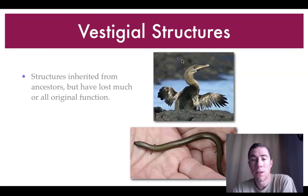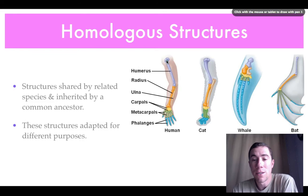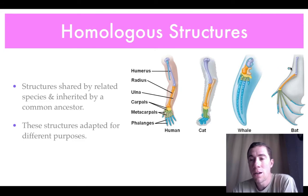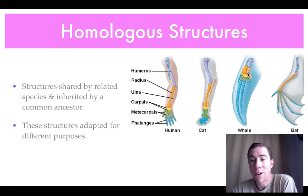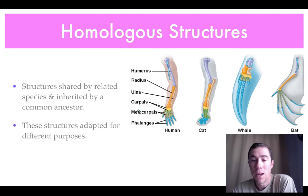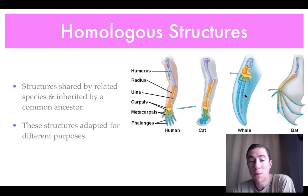Looking further, the cat also has a humerus toward the upper part of the limb, as do the whale and the bat. Going further down, the radius is present and very similar across all the species — purple, then orange. There's also the ulna, and then the carpals shown in yellow. We can see that these organisms all have homologous structures that have just been adapted over time for different purposes.